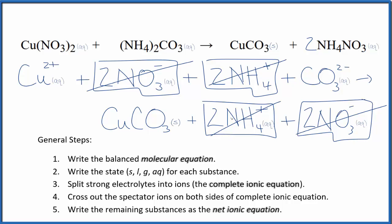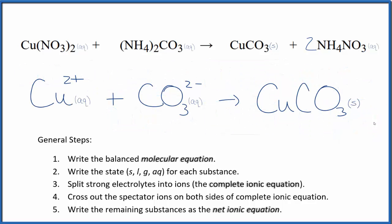What's left is the net ionic equation for Cu(NO3)2 plus (NH4)2CO3. Let's remove the spectator ions. And this is the balanced net ionic equation for this copper 2 nitrate plus the ammonium carbonate.